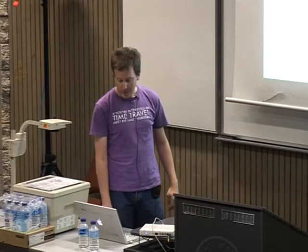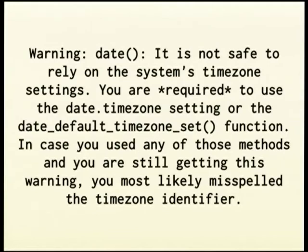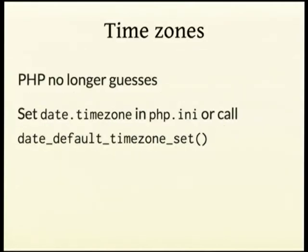Time zones. If you don't set the date_default_timezone configuration variable in php.ini, you get a warning message — and most of you have seen it. In all the current versions of PHP, PHP will attempt to guess what your current time zone is, which is hilariously broken, particularly on Windows. So PHP no longer guesses — you actually get UTC by default now. The correct way to fix this is either to set it in your php.ini or just call date_default_timezone_set at the top of your script.